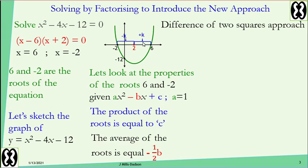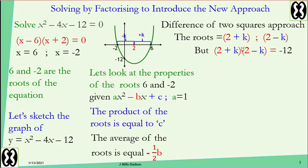Knowing the expression for the roots, by the second property when I multiply the roots I will always get the constant. So I form the expression for the roots as: two plus k and two minus k. I multiply the roots and set equal to the constant, then solve for k. The rules are: divide your b value by negative two, use that answer to express the roots, multiply the roots, set equal to the constant, and solve for k.